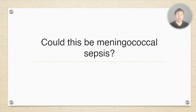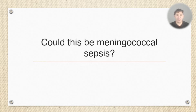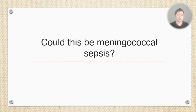The first topic is meningococcal sepsis. This is really important because it's a deadly disease, it's relatively common even though incidence has massively decreased since the meningococcal vaccine came out, and a lot of parents are worried about it. You need to know enough to recognize it, but also to reassure a parent when a child does not have any signs of meningococcal sepsis.